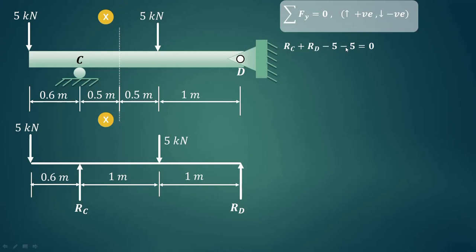So Rc plus Rd minus 5 minus 5 is equal to 0. Summation of forces is equal to 0. Now minus 5 and minus 5 will get transferred on the other side, that will be 10 kN. Now we have to apply the another condition of equilibrium: summation of moment is equal to 0, clockwise positive and anti-clockwise negative.